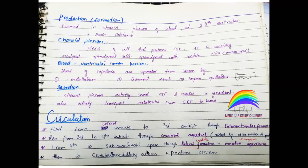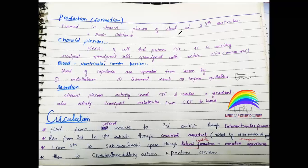Next, let's talk about production — where is CSF produced? All production takes place in the Choroid Plexus. The Choroid Plexus is found in the lateral ventricle, third ventricle, and fourth ventricle. The Choroid Plexus is made up of modified ependymal cells — ependymal cells that contain cilia.